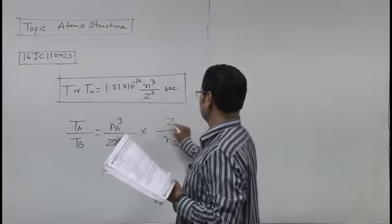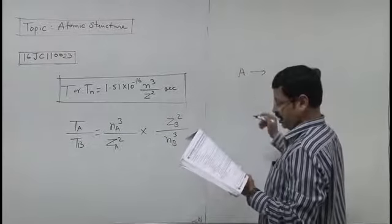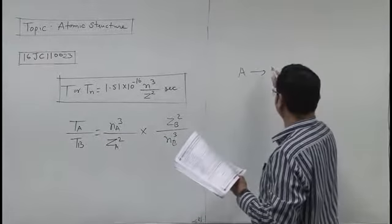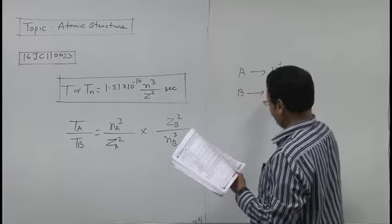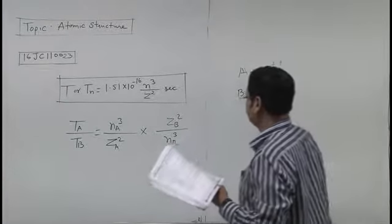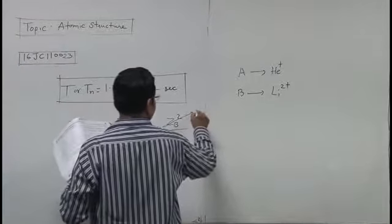z square cross mein hota hai, zb square. A species leliche hai aap ismein He plus ko, B species leliche hai Li2 plus ko. To yahaan gaya atomic number 2 ka square, yahaan plug in kar dijiye